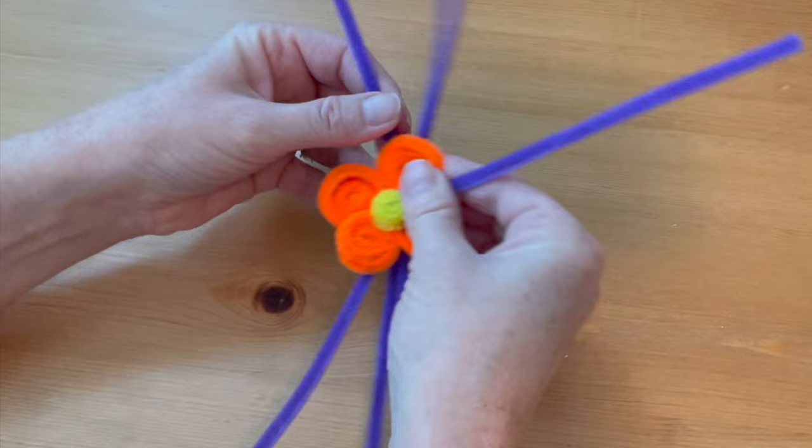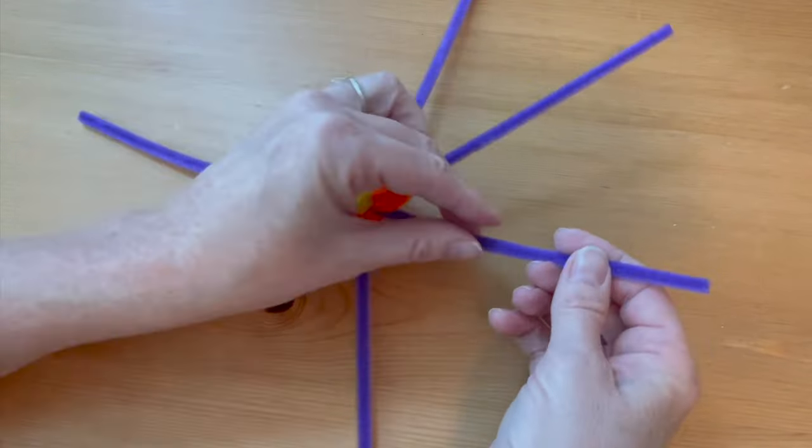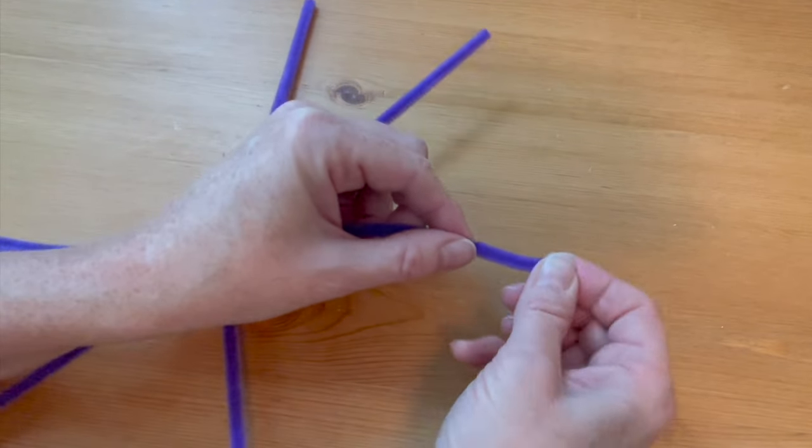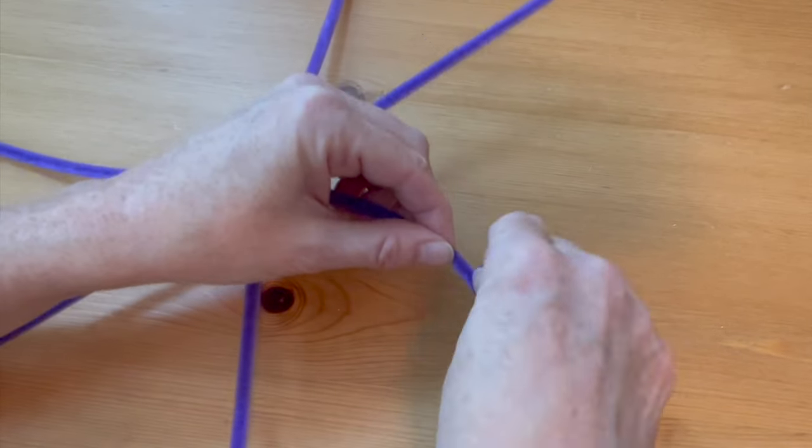Now spread out the other color of pipe cleaners, in this case purple, so that they're spread evenly. Then coil each one down just like you did for the orange pipe cleaners, but this time they will end just behind the orange petals.